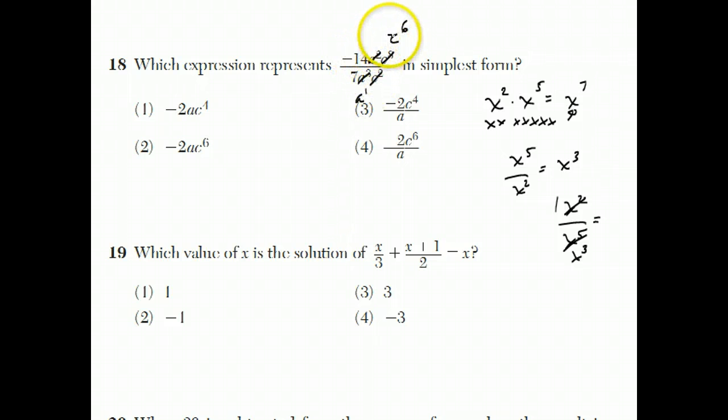And negative 14 over 7, that you just reduce the regular way, it becomes 2. So all that remains is the negative, the 2, the c to the 6, and the a to the first on the bottom. Answer to 18 is choice 4.